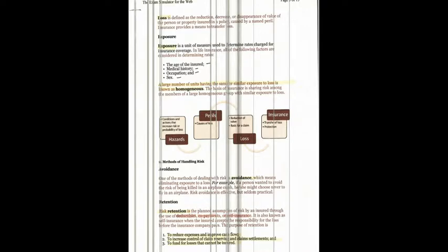Risk retention is a planned assumption of risk by the insured through the use of deductibles, copayments, or self-insurance. Examples include reducing expenses, improving cash flow, increasing control of claim reserving and claim settlement, and funding losses that cannot be insured. It is also known as self-insurance — you basically accept responsibility for the loss before the insurance company pays.